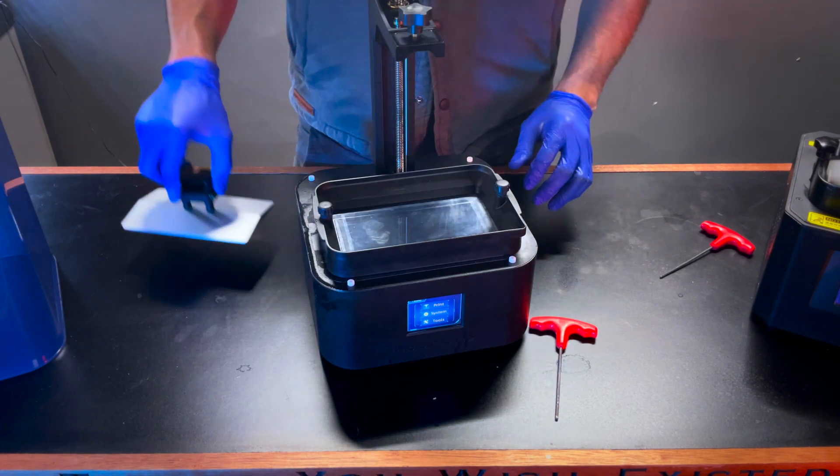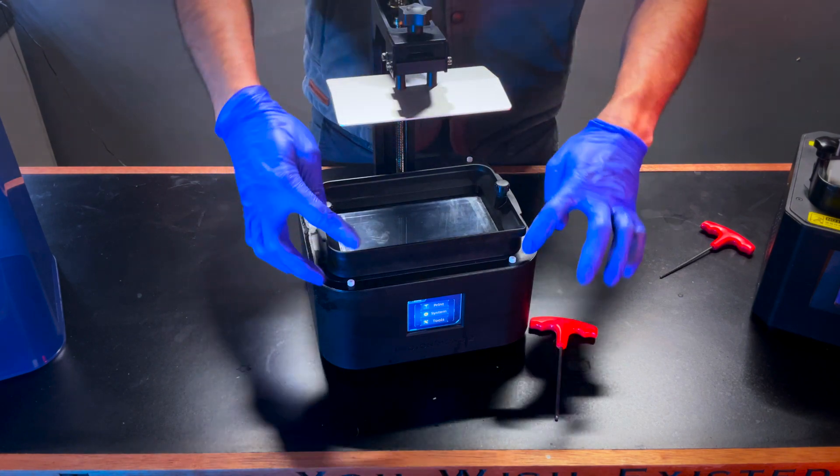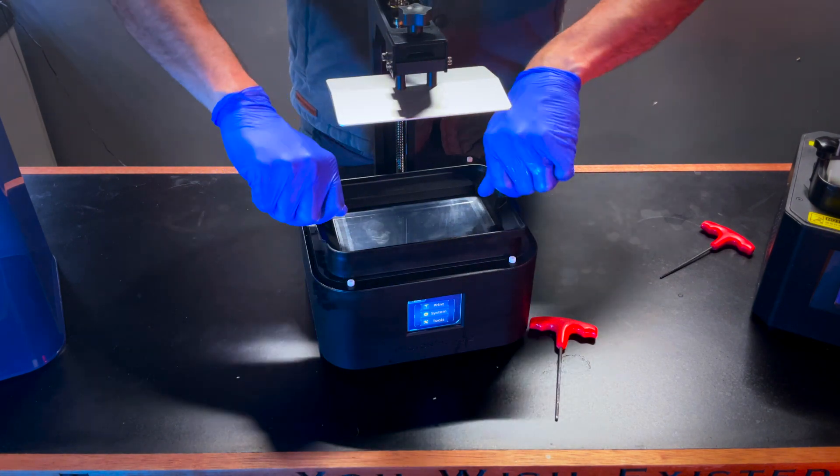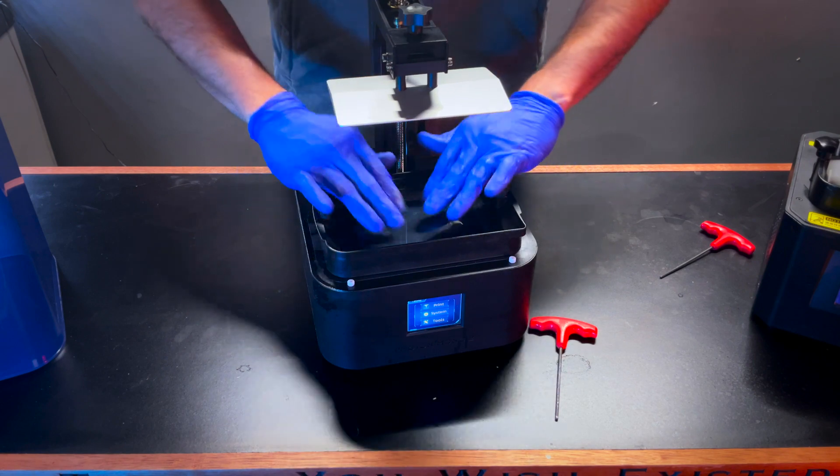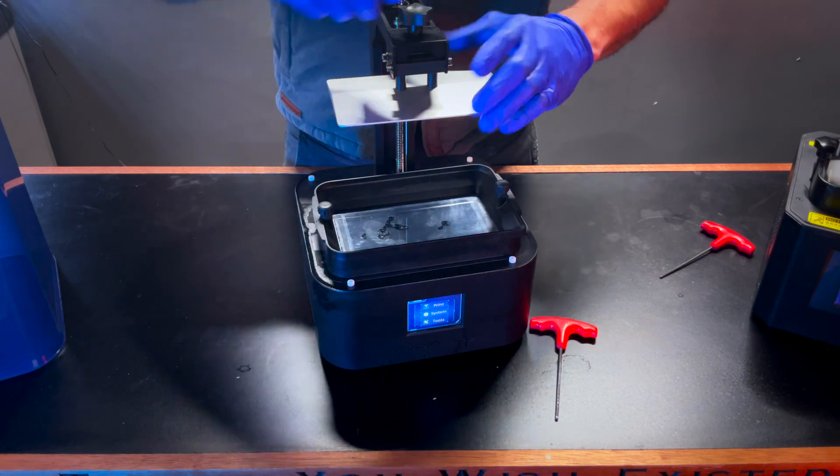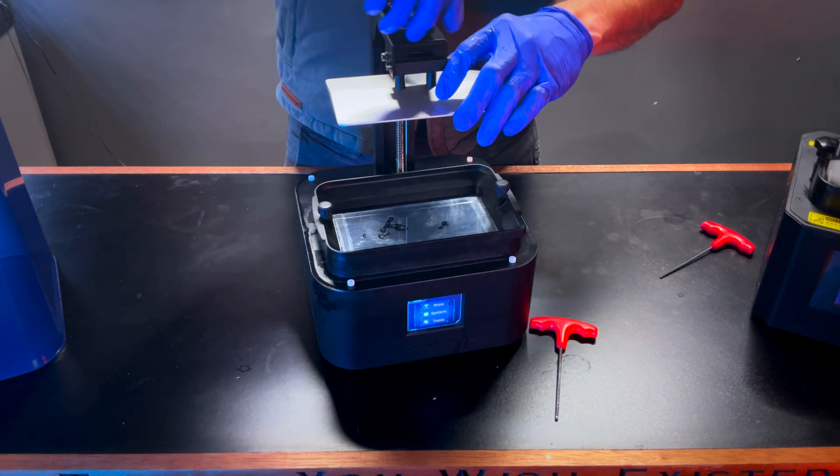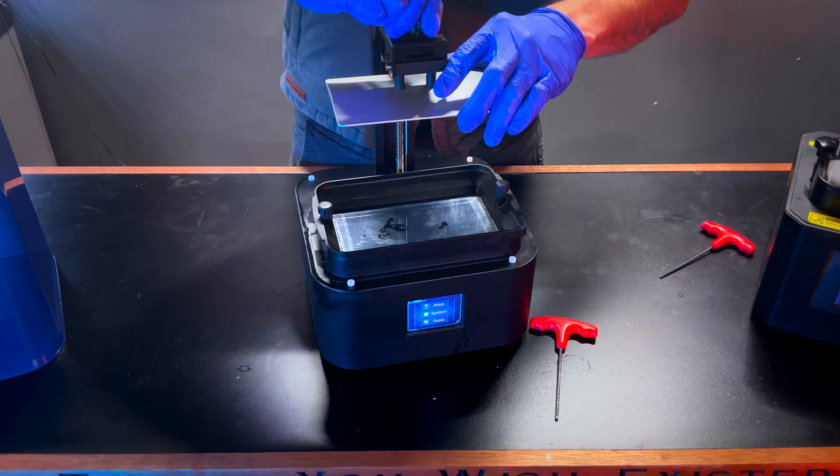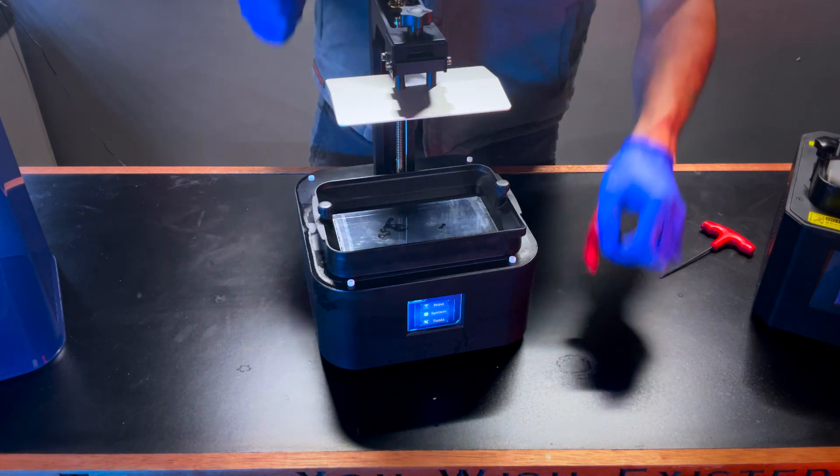So what you'll want to do is go ahead and install your screen protector, install your resin vat. Go ahead and make sure your film is in there. Go ahead and tighten down your build plate onto your arm, onto your Z axis arm.